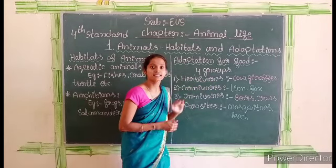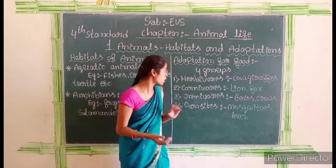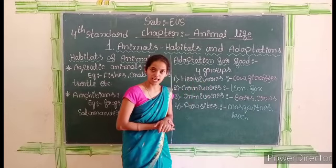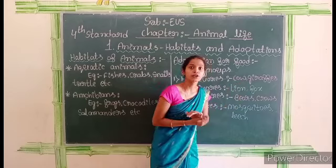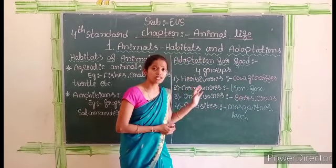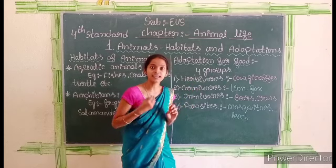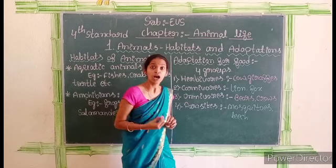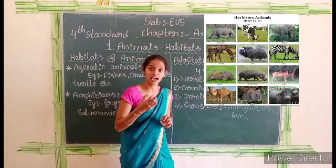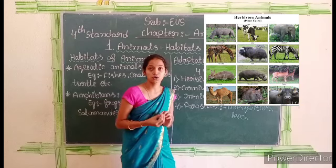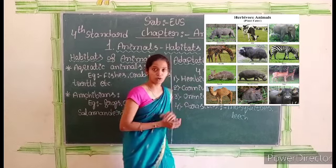Herbivores means sasya hari jeebi galu. The animals which eat plants are called herbivore animals. Examples of herbivores are cow, giraffe, goat, etc. These herbivore animals have sharp cutting teeth and also strong grinding teeth to cut and grind the plants they eat.